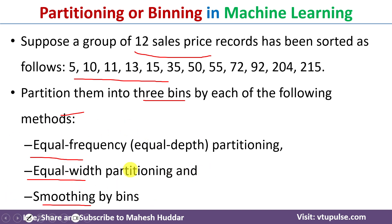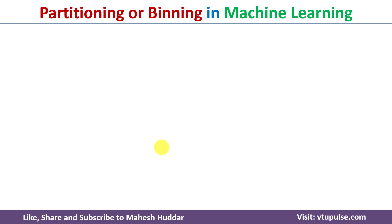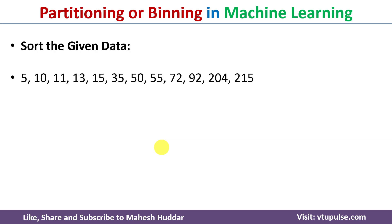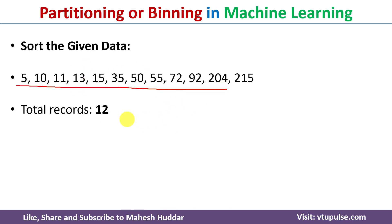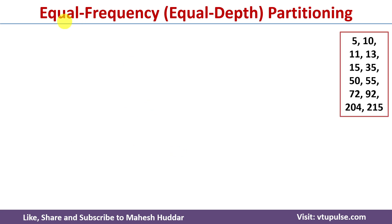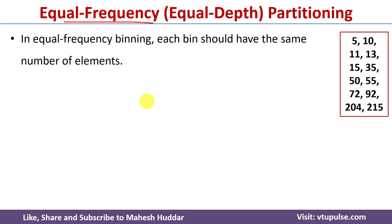Whenever we are trying to use these techniques, we need to sort the given data in ascending order. If you observe carefully, the given data is already in ascending order, so there is no need to rearrange it. If you count the number of data points we will get 12 records, and here we need to create three bins. First I will consider the equal frequency partitioning method.